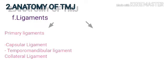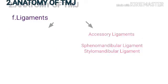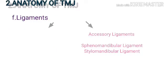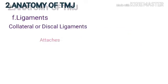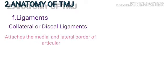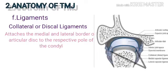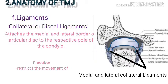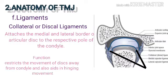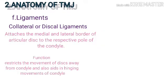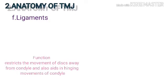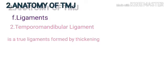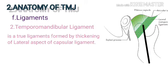Ligaments — primary ligaments: capsular ligament, temporomandibular ligament, and collateral ligament. Accessory ligaments are the sphenomandibular and stylomandibular ligaments. The collateral or discal ligament is attached at the medial and lateral borders of the articular disc to the respective poles of the condyle. Its function is to restrict movement of the disc away from the condyle and to aid in the hinging movement of the condyle.